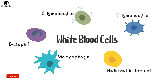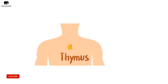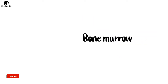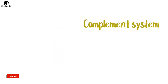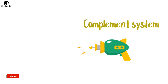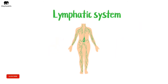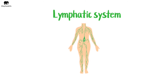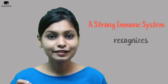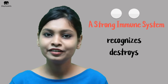When we are exposed to an antigen, these cells launch an immune attack. The thymus produces progenitor cells which mature into T lymphocytes. Bone marrow contains high levels of multiple immune cells. The complement system is made up of proteins whose actions complement the work done by antibodies. The lymphatic system coordinates the trafficking of antigens and immune cells. A strong immune system constantly recognizes and destroys any uninvited guest.